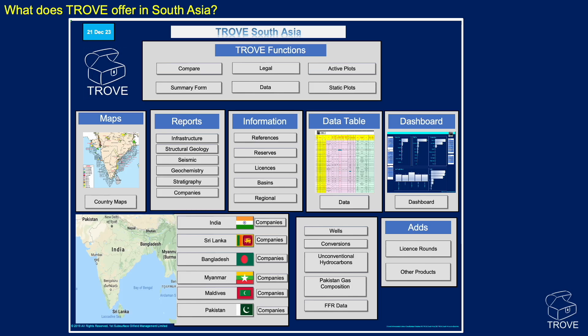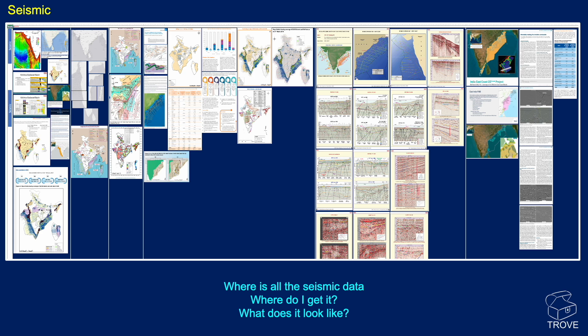We've got information on gas composition, on unconventional hydrocarbons, on wells — and these are all databases within a database, so very useful to find all the information in one place. As an illustration, here's information on seismic. Where is all the seismic data? You'll find here the companies that have shot data across the region, and we urge them to make sure their data is included within the Trove database.